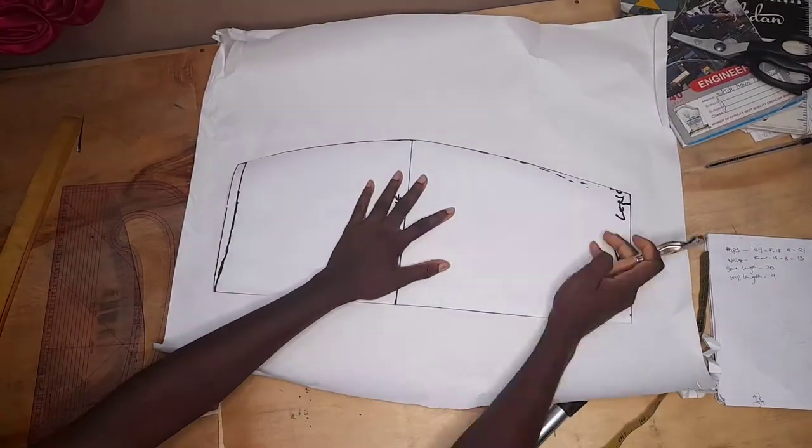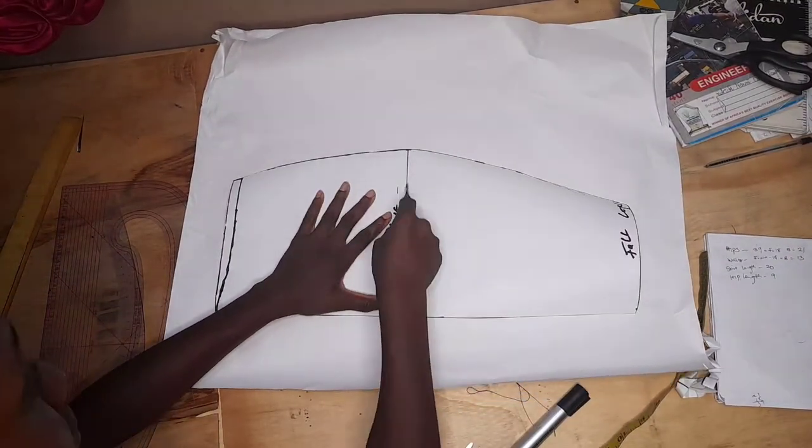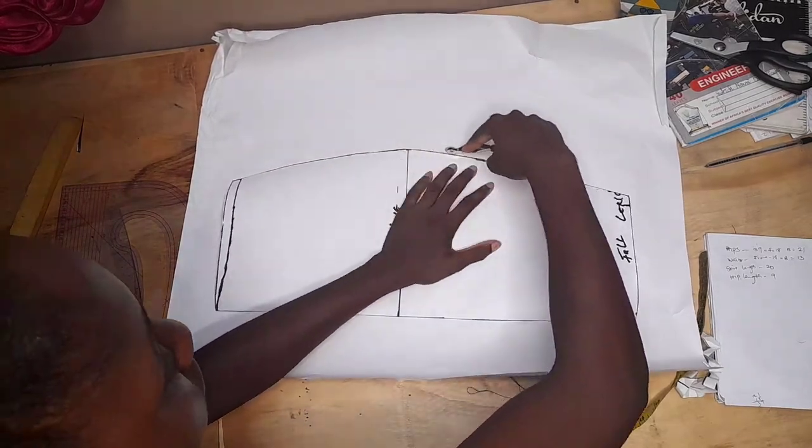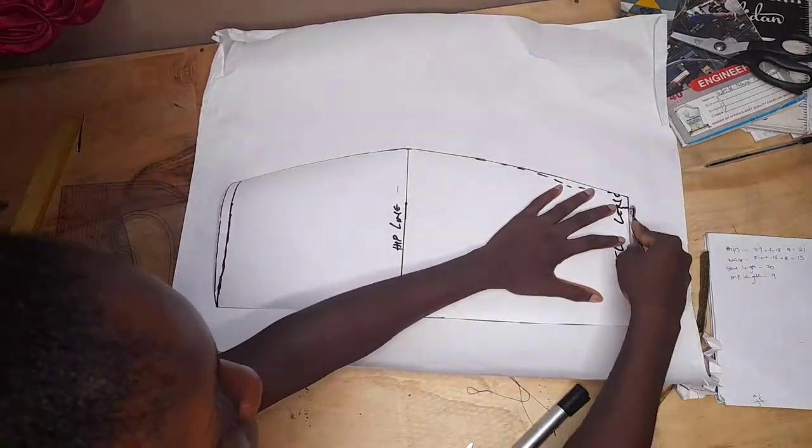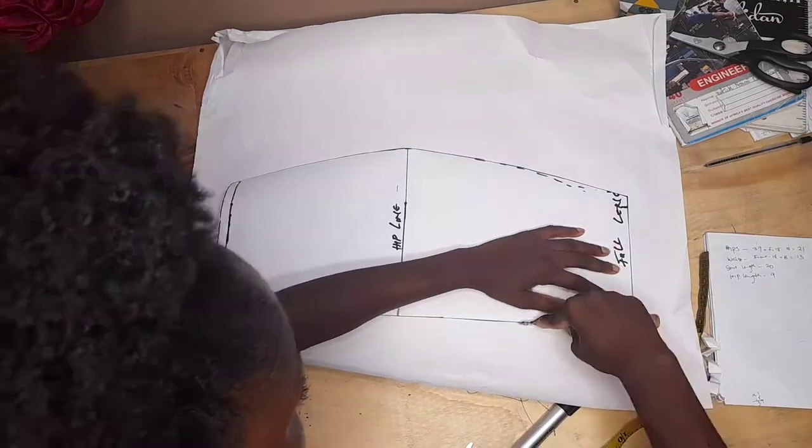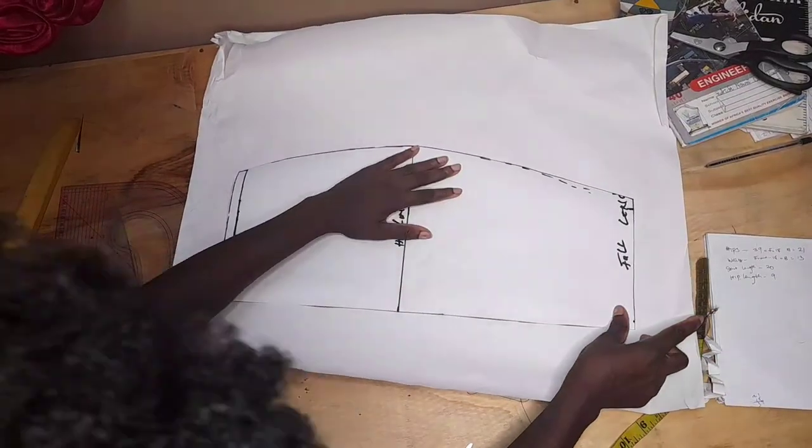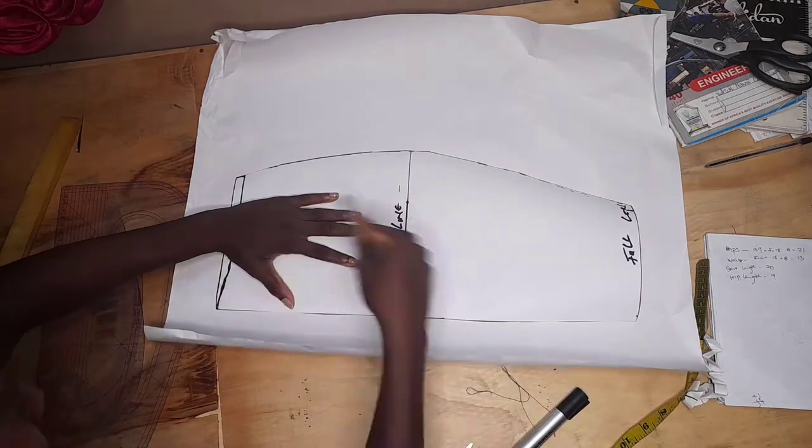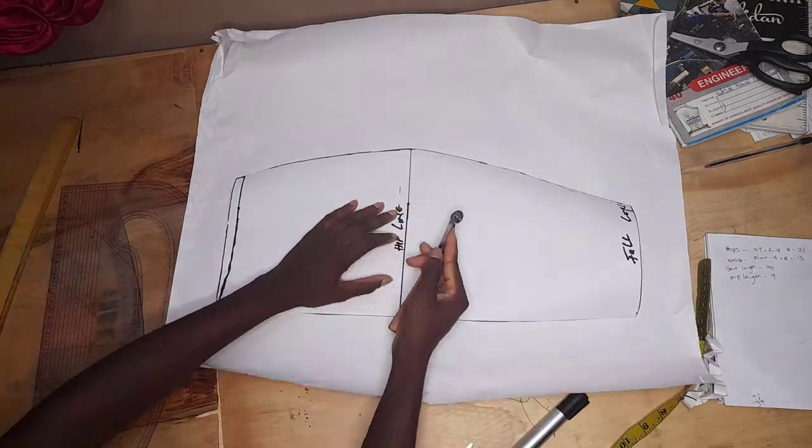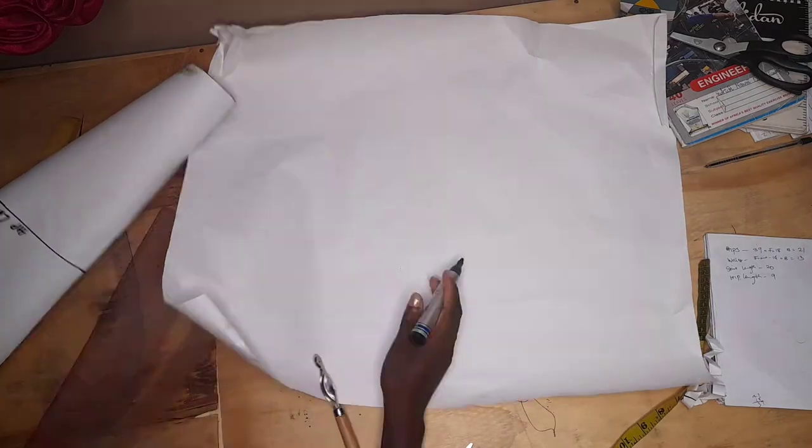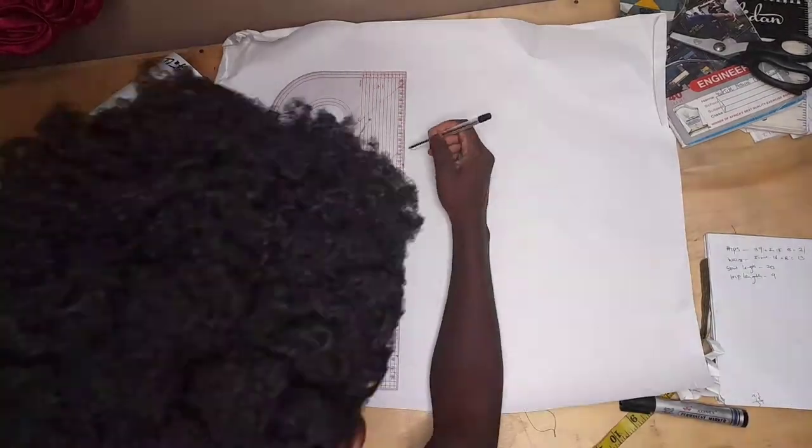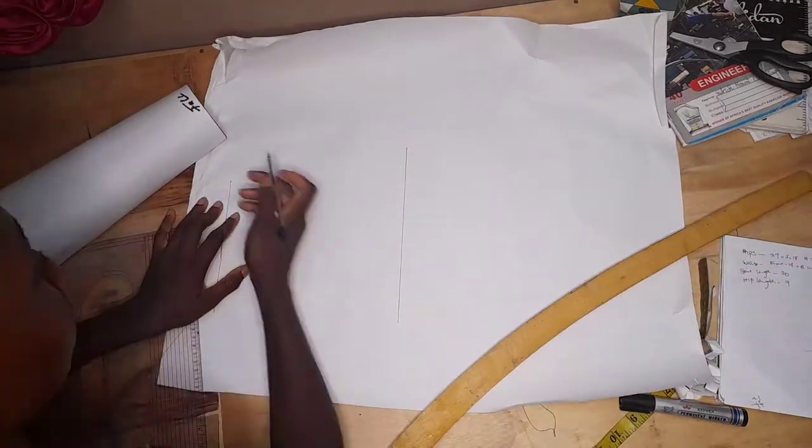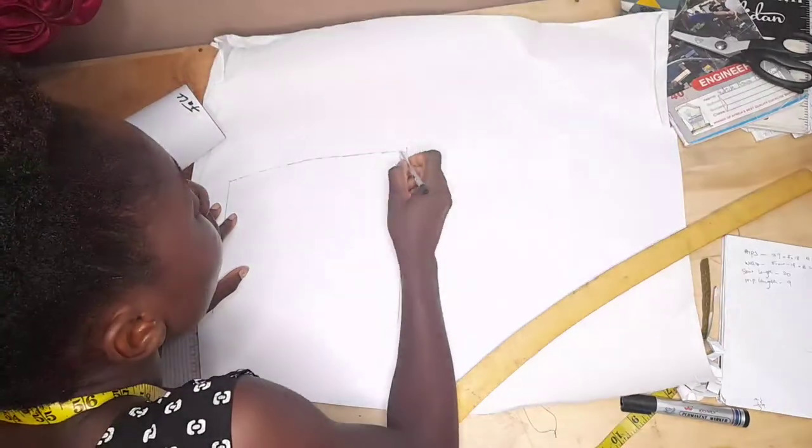Trace out your front skirt pattern onto another pattern paper. Use the tracing wheel to do the tracing because it's way easier that way. You can see the dotted lines so you can just follow through. After using the tracing wheel, I just traced out my dotted lines using a pen.